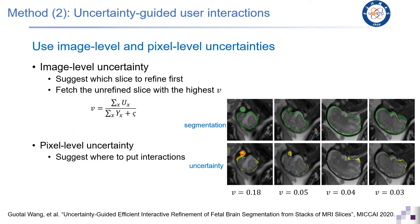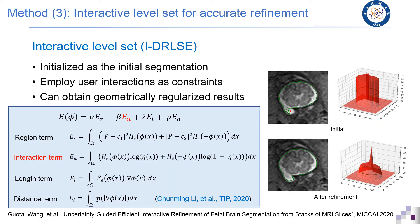Based on the pixel-level uncertainty, we can also define the image-level uncertainty, which is a sum of the pixel-level uncertainty normalized by the size of the target. We rank the slices according to the image-level uncertainty and present the slice with the highest uncertainty to the user first. Then we use these pixel-level uncertainties to guide the user to give interactions.